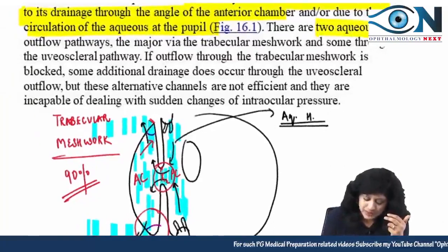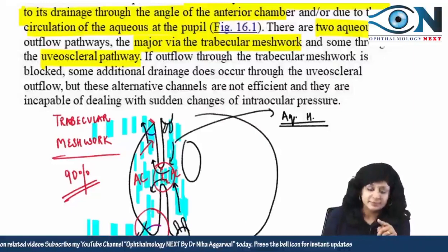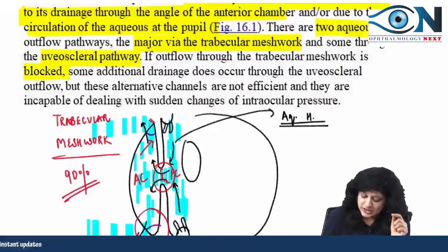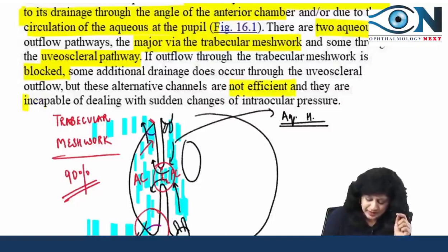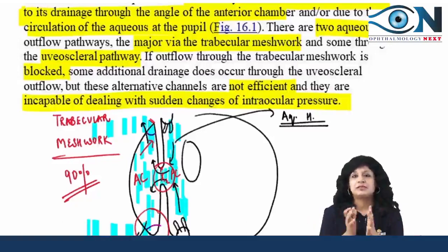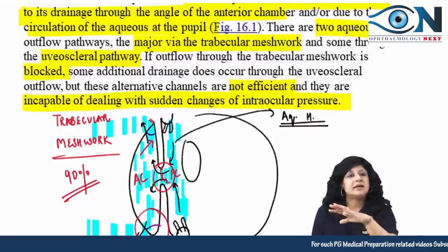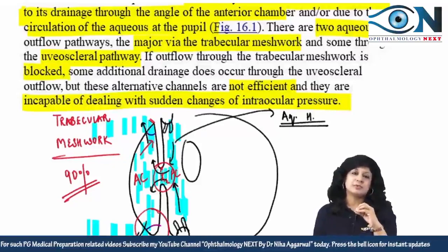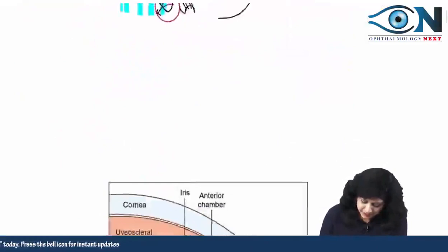There are two aqueous outflow pathways. The major one is the trabecular pathway and the smaller one is the uveoscleral pathway. If outflow through the trabecular meshwork is blocked, some additional drainage does occur through the uveoscleral pathway, but these alternative channels are not efficient and are incapable of dealing with sudden changes in intraocular pressure. So if there is a problem with the trabecular meshwork, the uveoscleral outflow cannot compensate and glaucoma results.